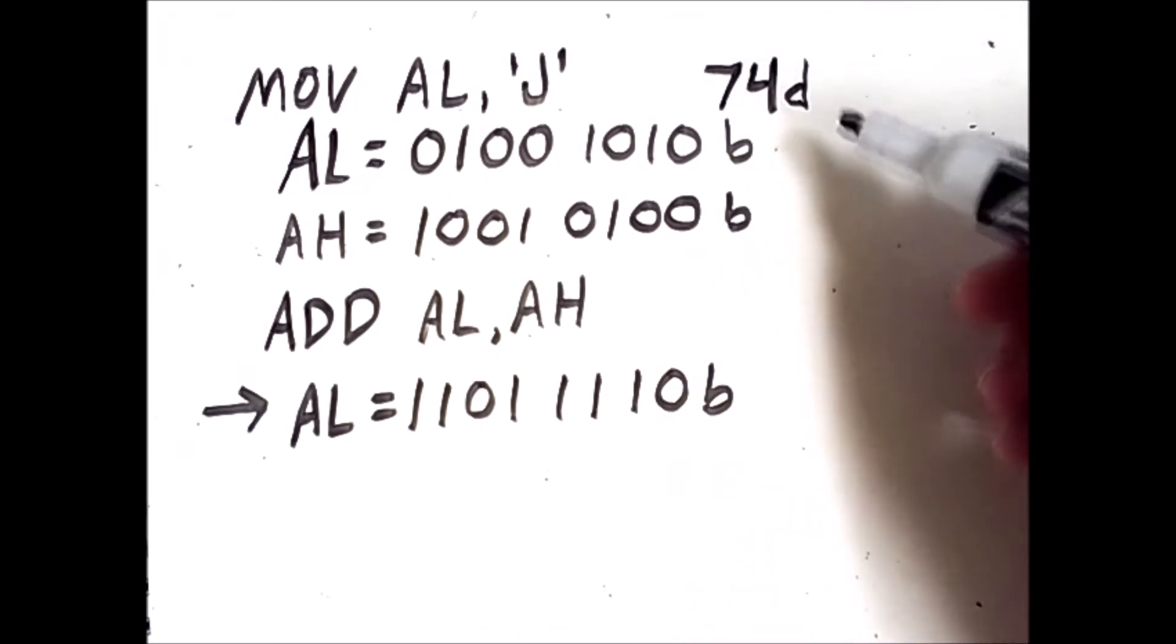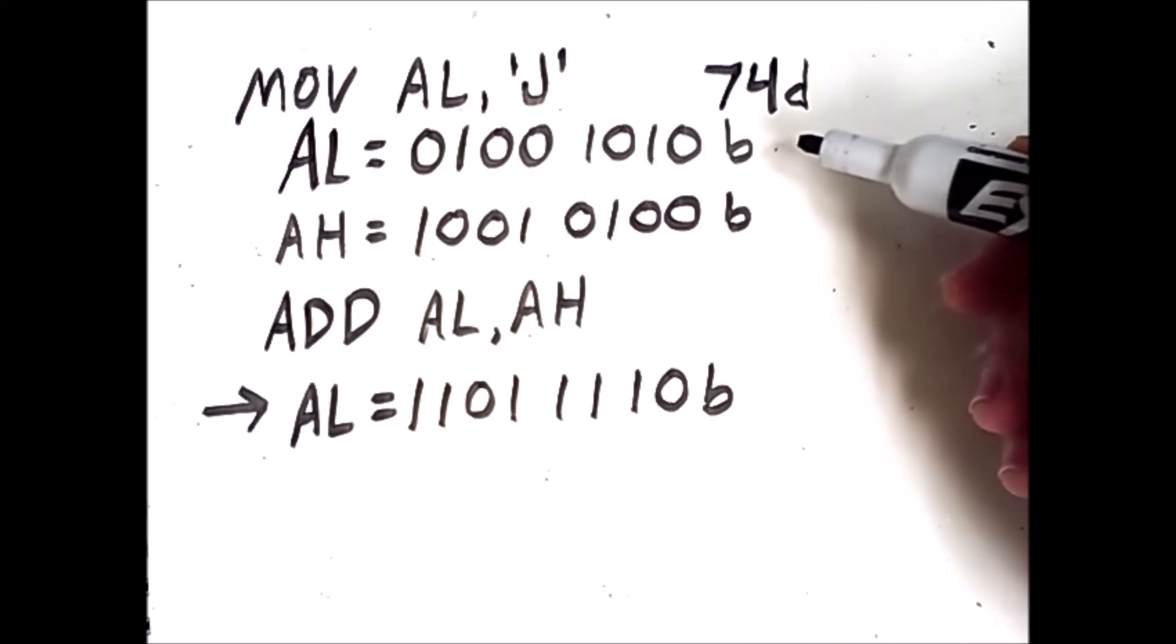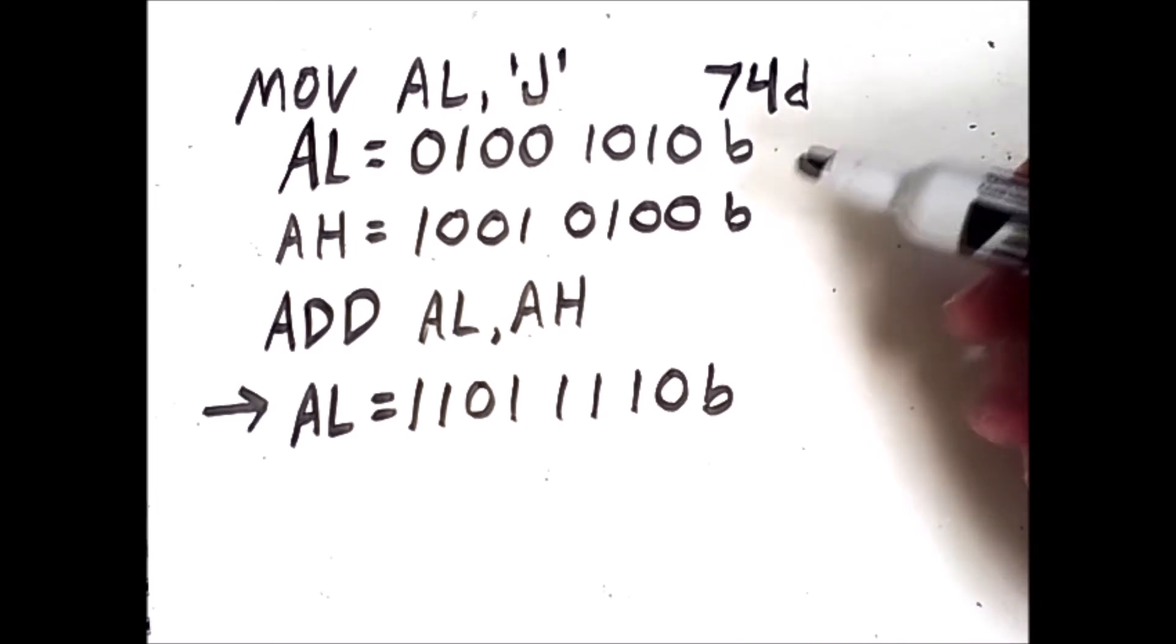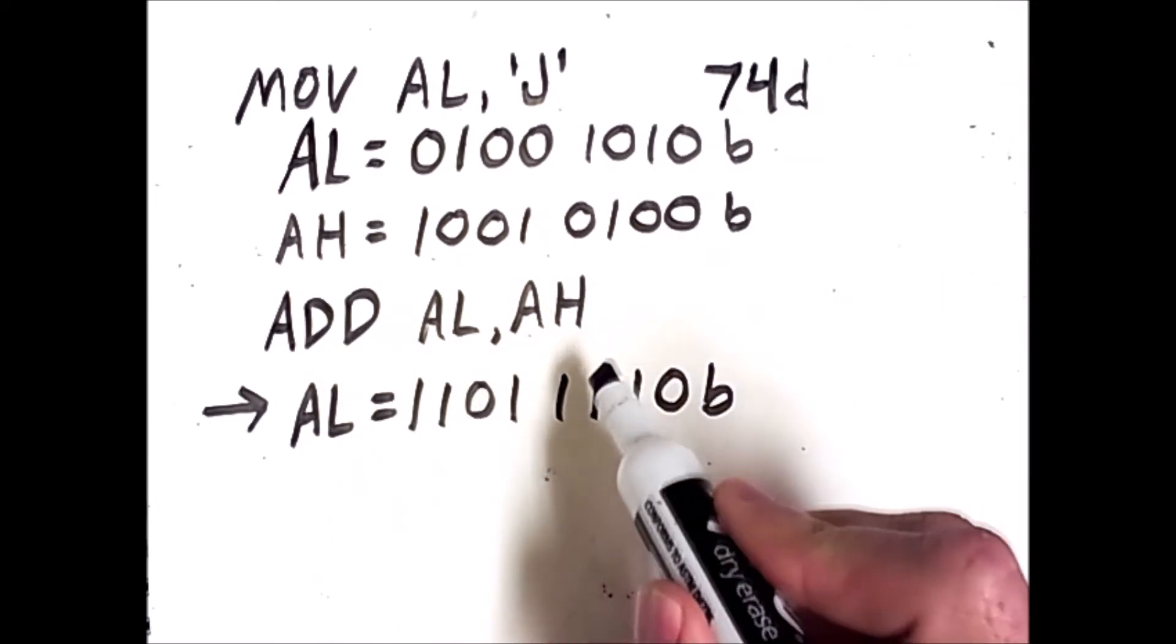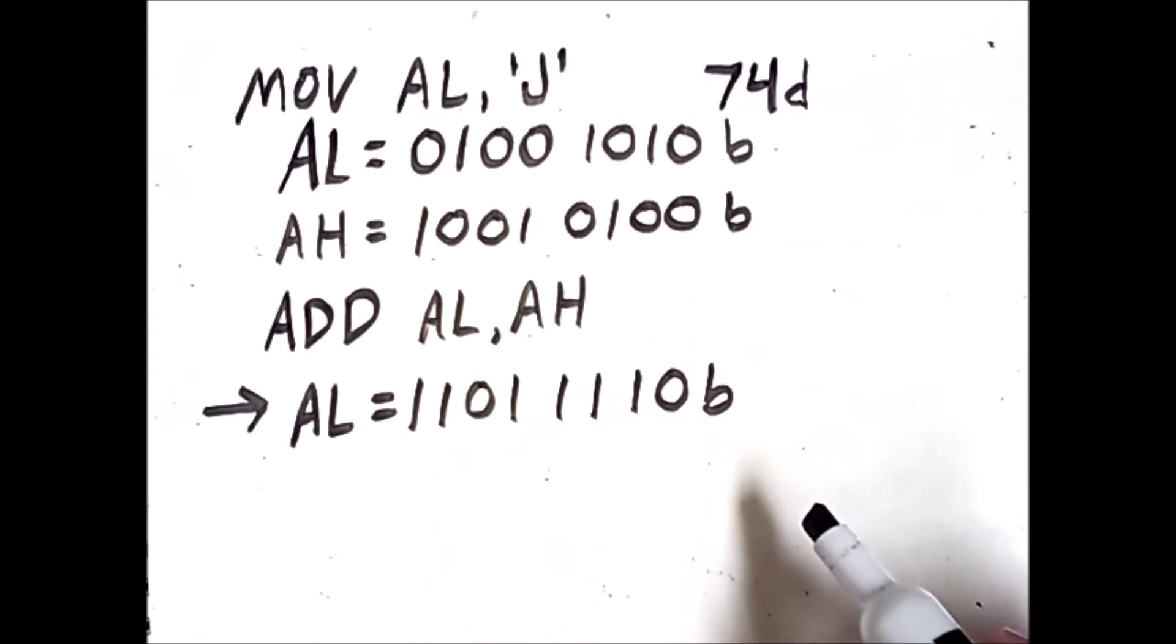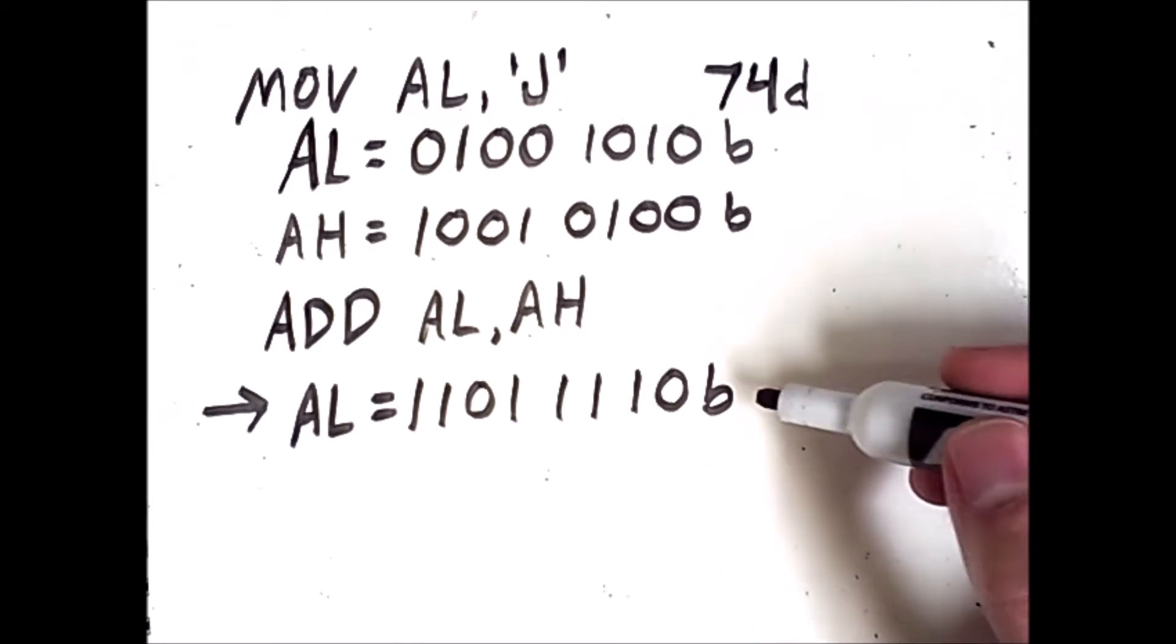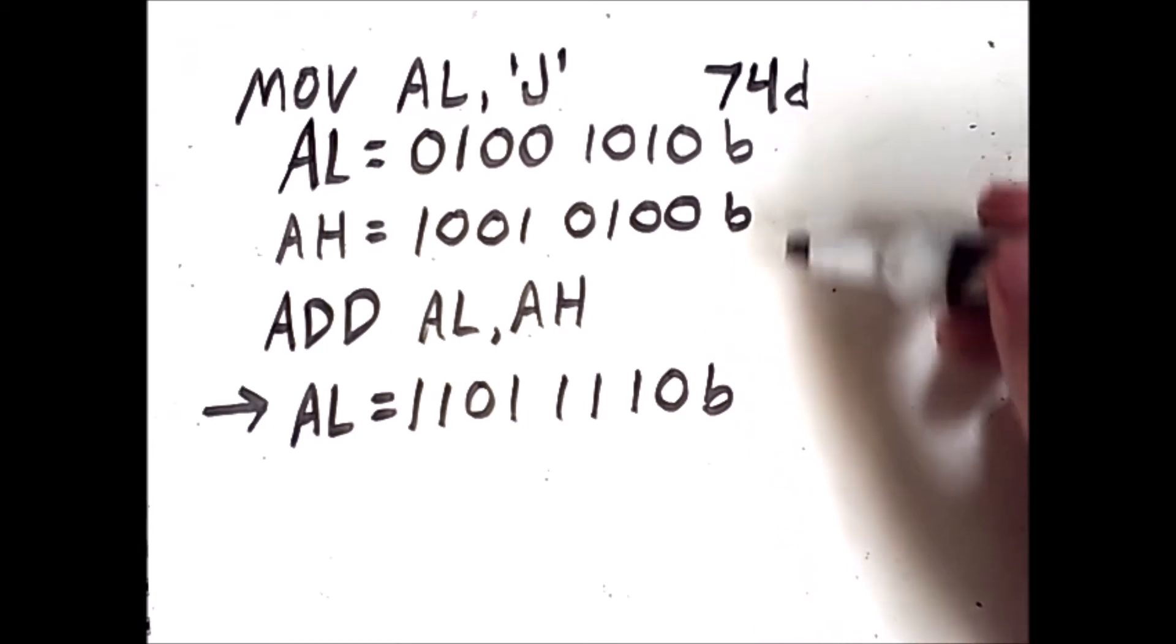So if I move J into AL, it will contain several bits, but then when I add AL to AH, I get a sequence of bits out, and according to the ASCII code at least, neither of these values are characters.